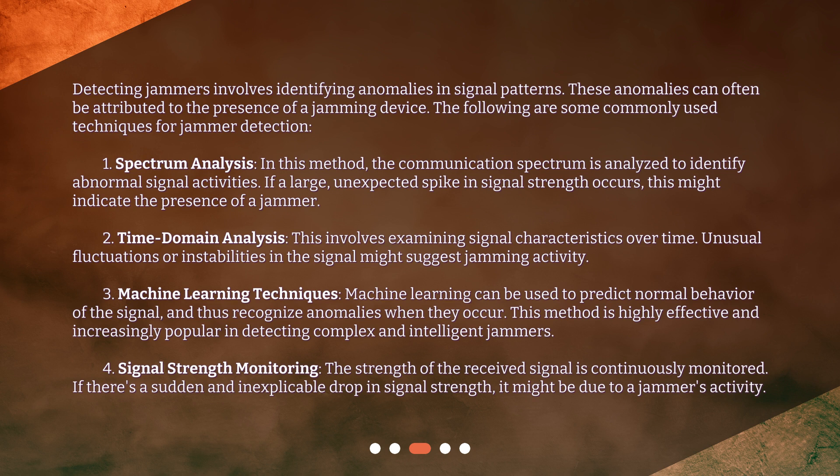In this method, the communication spectrum is analyzed to identify abnormal signal activities. If a large, unexpected spike in signal strength occurs, this might indicate the presence of a jammer.